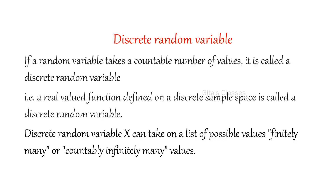By definition, a random variable — you know already what is a random variable. Random variable means you are assigning some number for each outcome of the sample space. So, if the random variable takes only a countable number of values, then it is called a discrete random variable. We are defining discrete random variable only for discrete sample space.